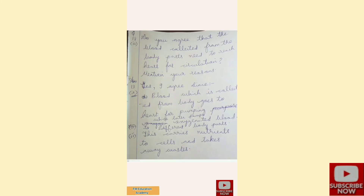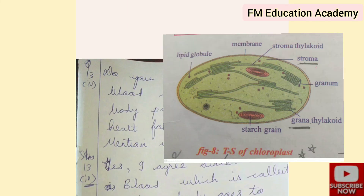Fourth bit: do you agree that blood collected from body parts needs to reach the heart for circulation? Yes, I agree, because blood collected from the body goes to the heart for pumping, which later pumps oxygenated blood to different body parts. This also carries nutrients to cells and takes away waste.